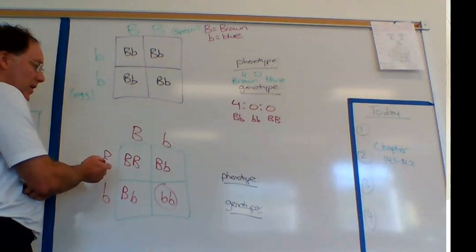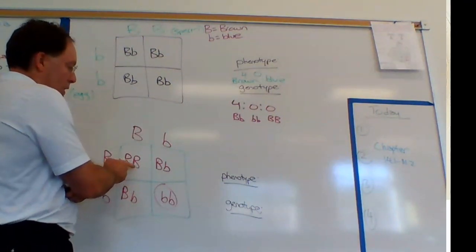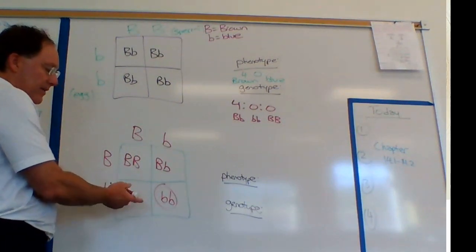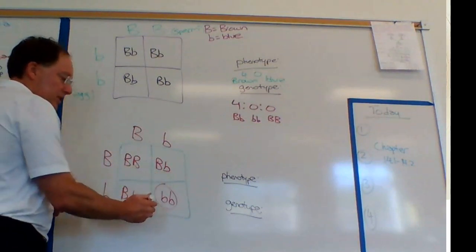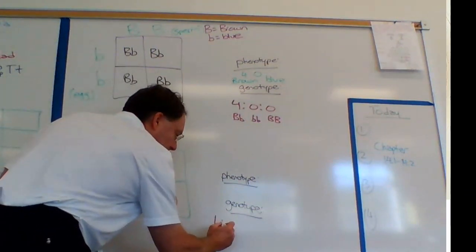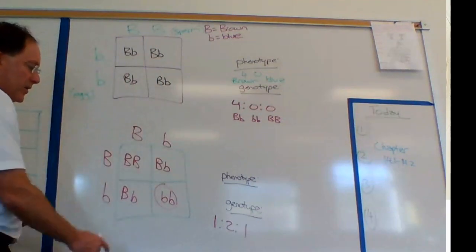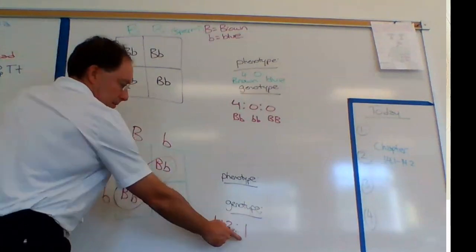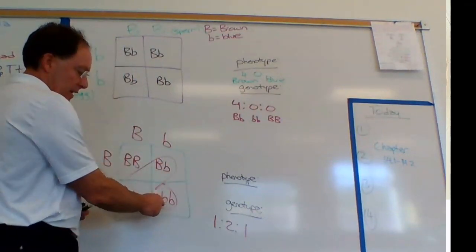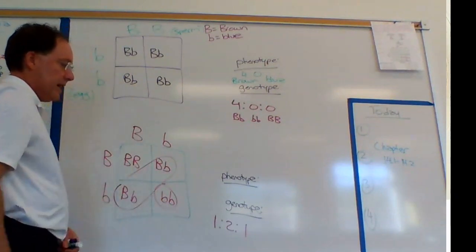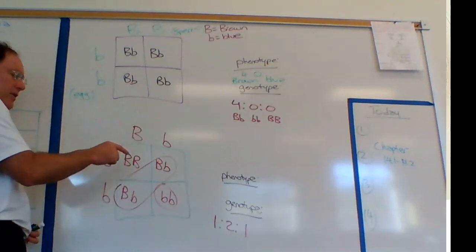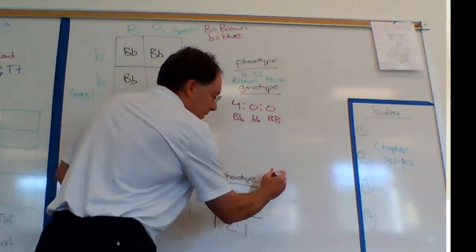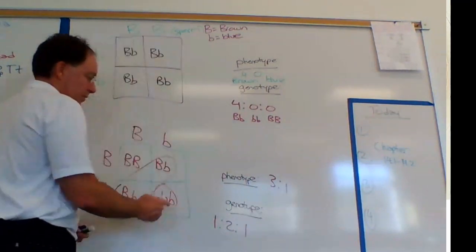This is called a monohybrid cross. When we do this, we get genes coming together that give different phenotypes. Let's look at the genotypes first. This gives us a 1:2:1 genotypic ratio — one homozygous dominant, two heterozygous, and one homozygous recessive. I always like to circle the homozygous recessive because it draws my eye to it.